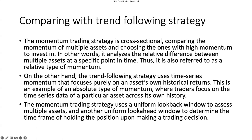This strategy is cross-sectional. Comparing with the previous trend following strategy, this is the first notable difference. The momentum training strategy is cross-sectional, meaning it compares the momentum of multiple assets and chooses the ones with the high momentum to invest in. For example, if I have 10 assets, I want to choose the top five to invest in. The essence is that it analyzes the relative difference between multiple assets at each specific point in time. This is also called relative momentum, compared to the trend following strategy discussed earlier, which is more of an absolute momentum.